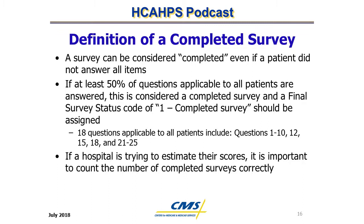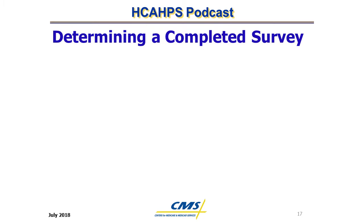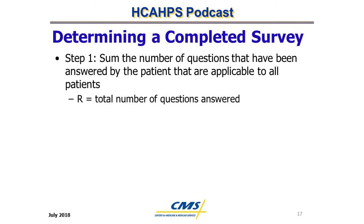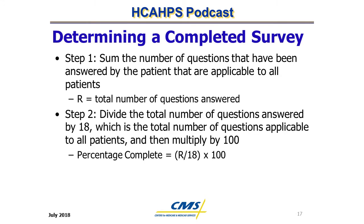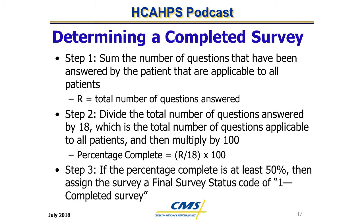When estimating HCAHPS scores, it's important to accurately count completed surveys. To determine a completed survey: Step 1, sum the number of questions applicable to all patients that have been answered — questions 1–10, 12, 15, 18, and 21–25 — and define this total as R. Step 2, divide R by 18 (the total number of questions applicable to all patients) and multiply by 100 to calculate the percentage. Step 3, if the percentage is at least 50%, assign the survey a final survey status code of 1 (completed survey).